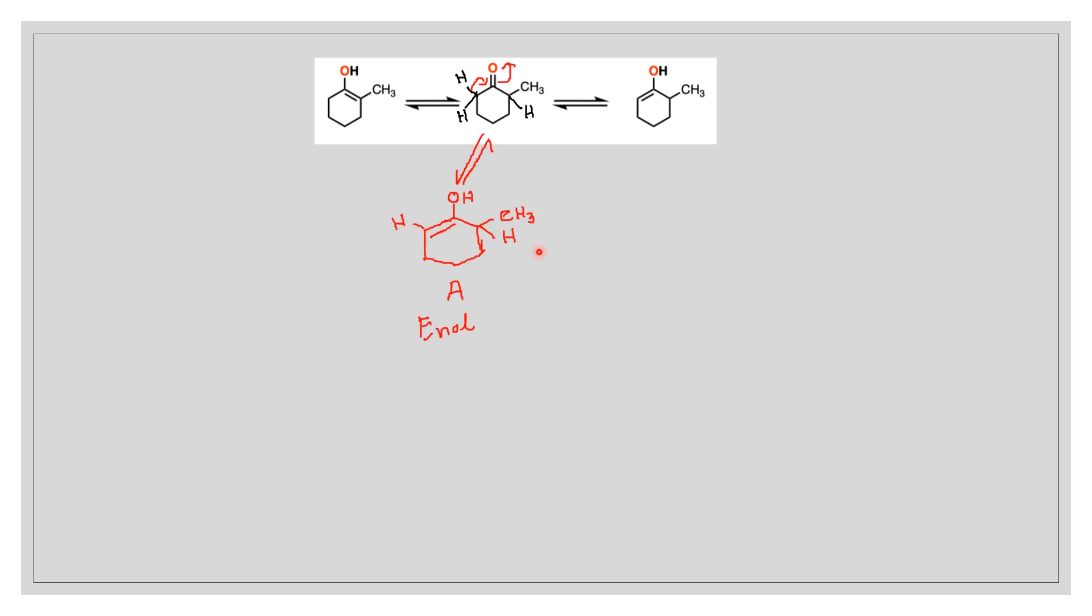We know alpha hydrogens take part in keto-enol tautomerism. When the left-hand side alpha hydrogen takes part in keto-enol tautomerism, we get compound A.